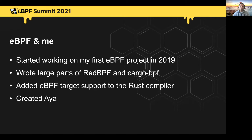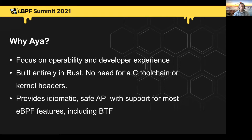At the beginning of the year I started working on a new library that I also released a couple of months ago called AYA. The reason why I started working on AYA is that I wanted to build a library with a strong focus on operability, ease of deployment, and developer experience. AYA is built entirely in Rust. It does not need a toolchain or kernel headers to build, does not link to any external libraries, and is completely self-contained and very easy to deploy. And even though it's a relatively young project, it already provides an idiomatic and safe API for most of the features exposed by the eBPF platform, including BTF.